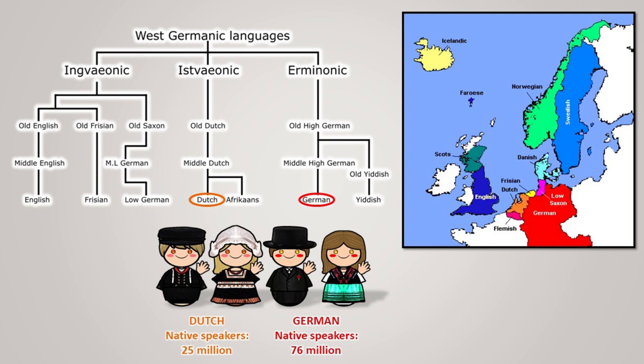While German and Dutch are quite similar in terms of vocabulary, they do differ significantly grammatically. German has four cases, while Dutch has none. Dutch has only two genders — common and neuter. Common stands for both the feminine and masculine, while neuter stands for most objects without gender. However, German has masculine, feminine, and neuter.